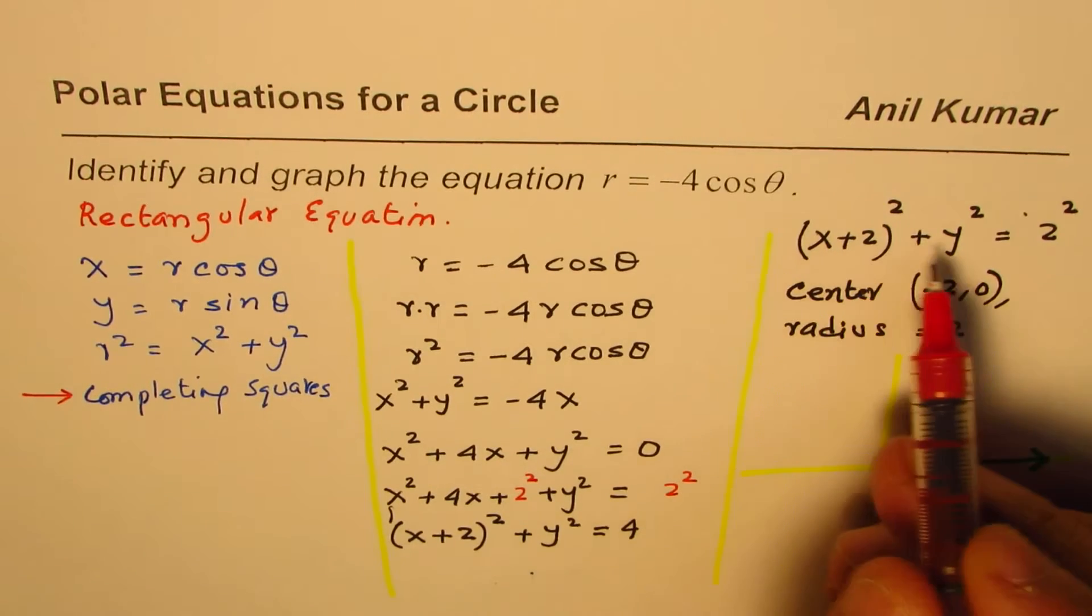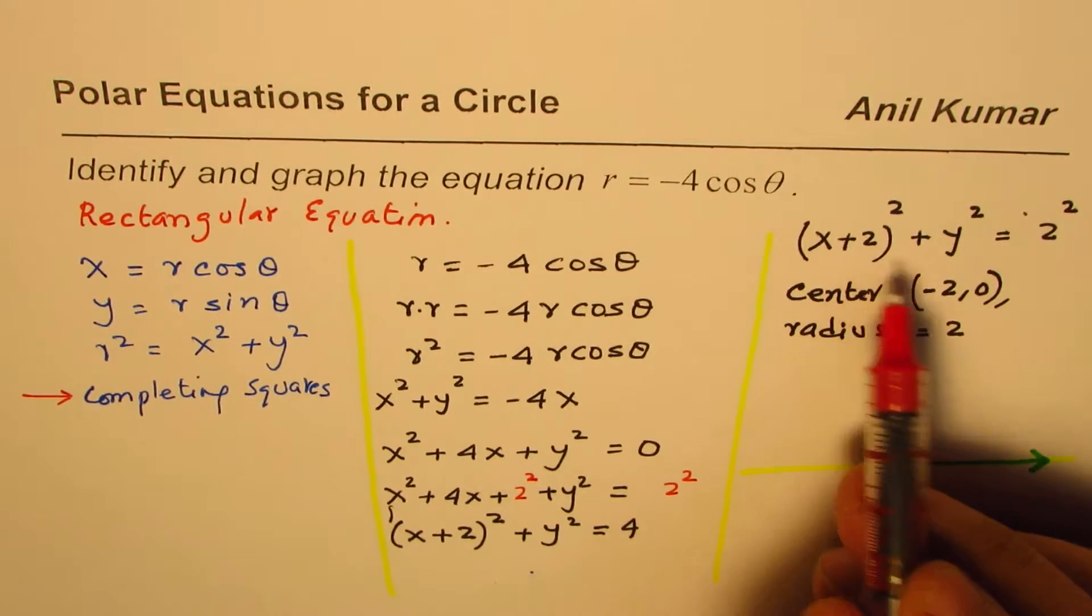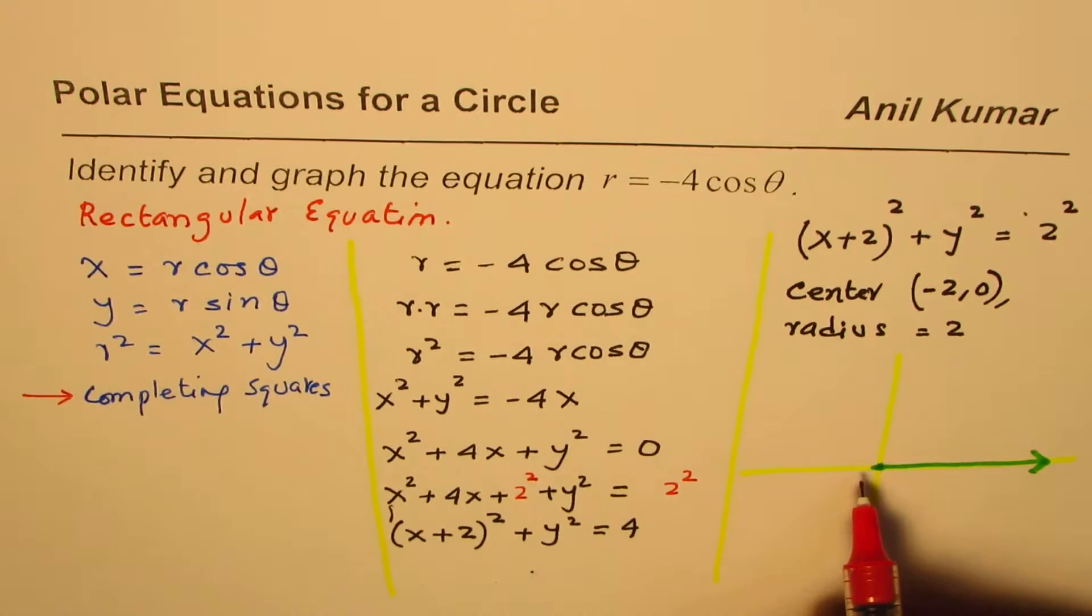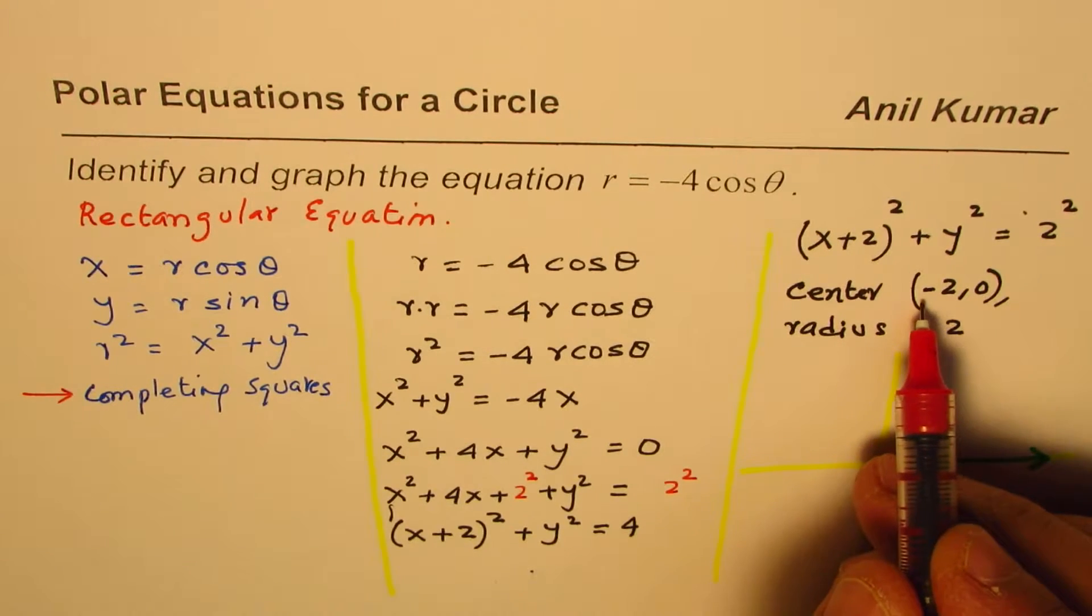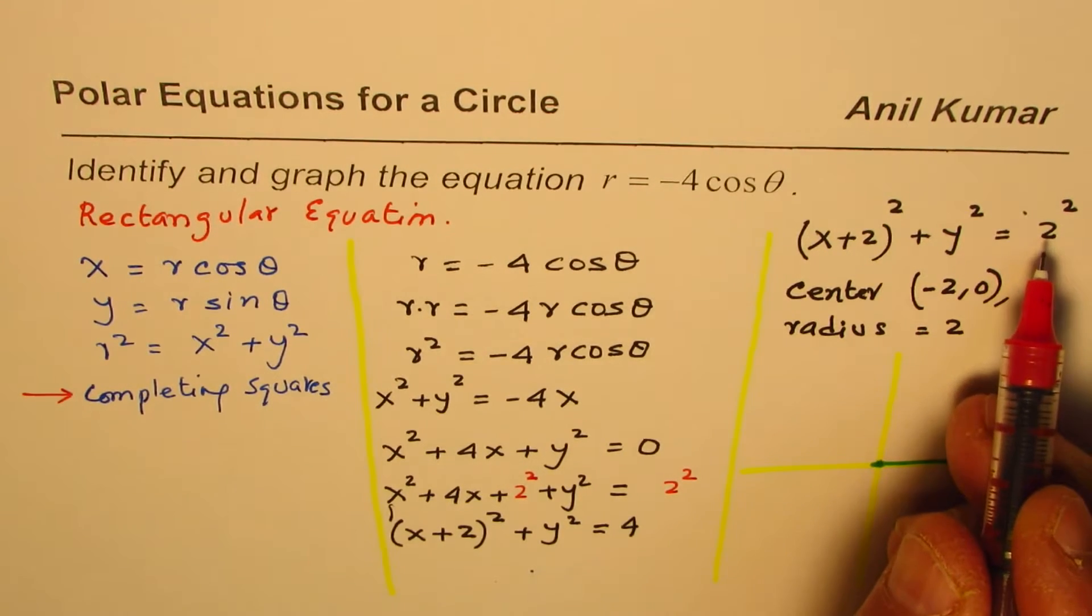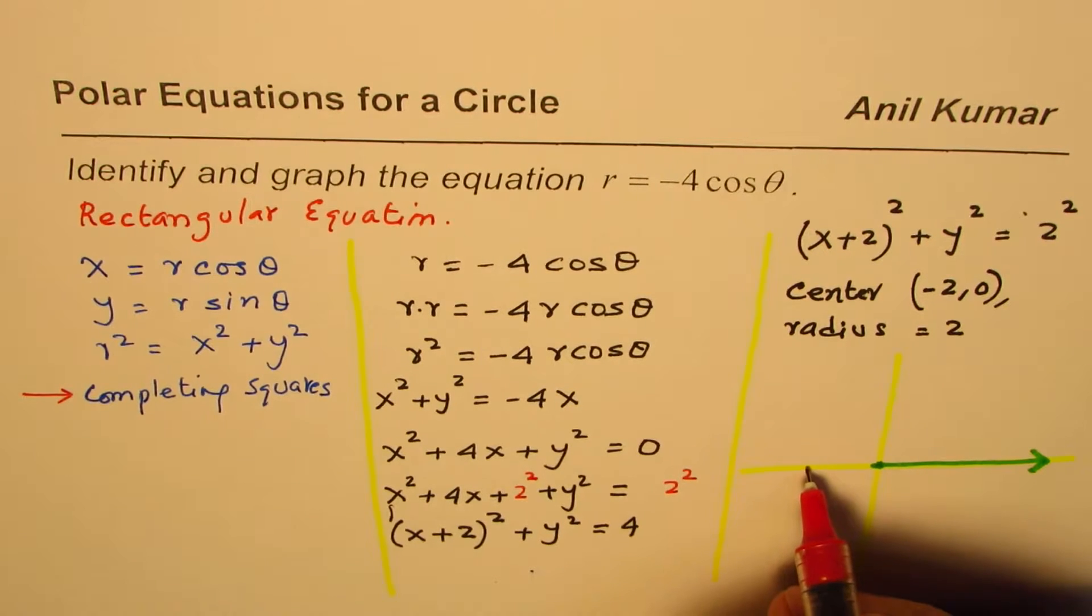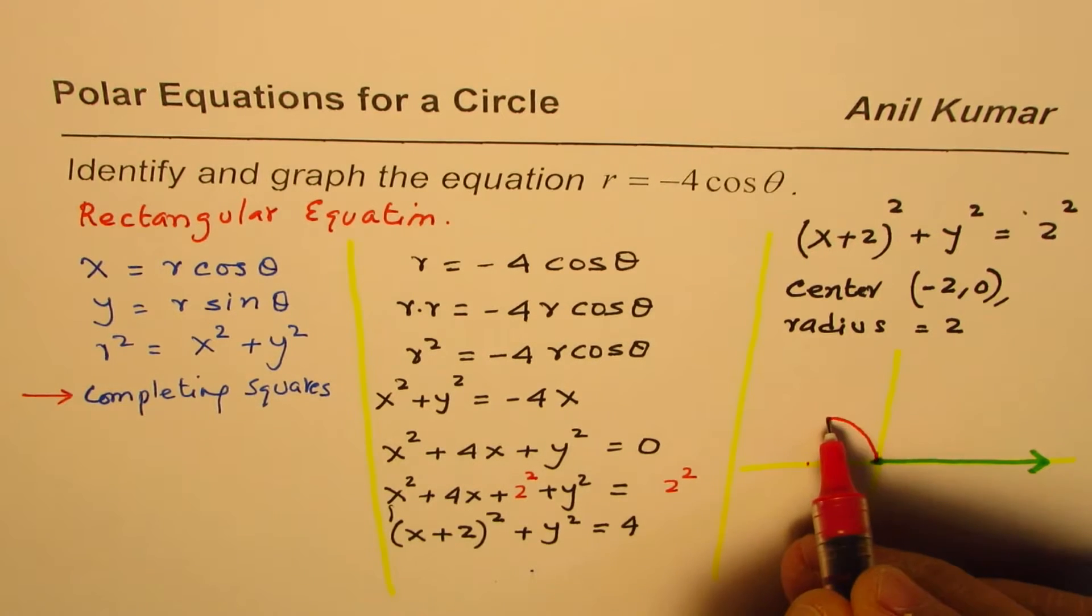Now, here, we are talking about a circle which has a center at minus 2. And the radius of the circle is 2 units. So, let us say this is minus 2 for us and the radius is 2 units. So, the circle will be kind of like this.